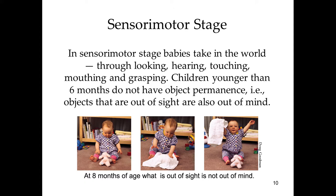The other big milestone in the sensorimotor stage is stranger anxiety, which also appears at about eight months. Babies begin to develop a fear of unfamiliar people, becoming very attached to their mothers and fathers and very uncomfortable around strangers. This is an understandable adaptive trait, which we'll go into in more detail shortly.